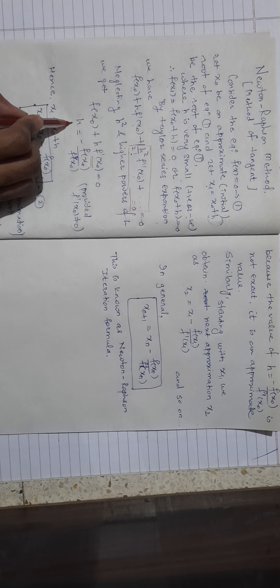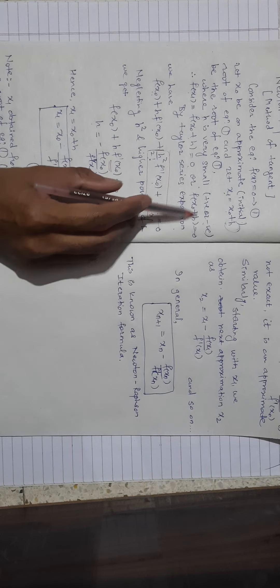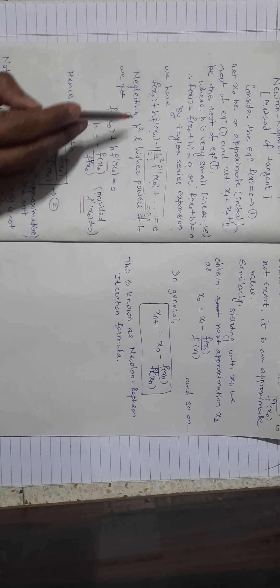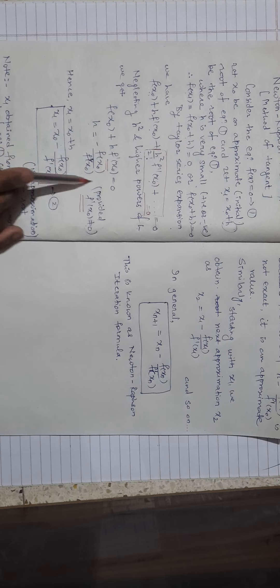We find f(x₁), where x₁ = x₀ + h, so f(x₀ + h) = 0. Using the Taylor series expansion in calculus, f(x₀ + h) = f(x₀) + h·f'(x₀) + (h²/2!)·f''(x₀) + higher order terms = 0. Neglecting h² and higher powers of h, we get f(x₀) + h·f'(x₀) = 0.